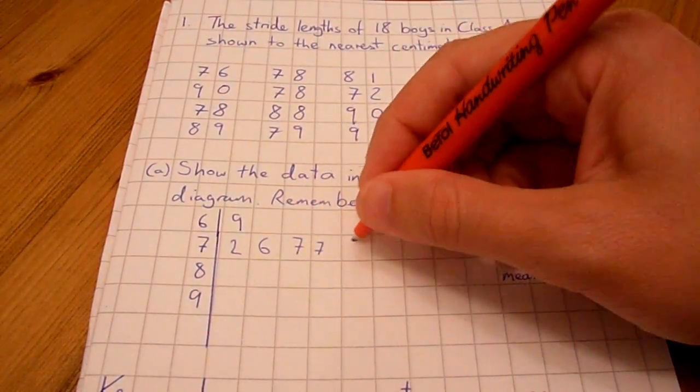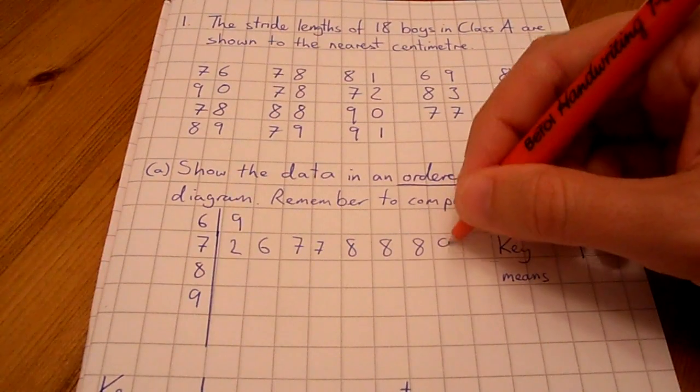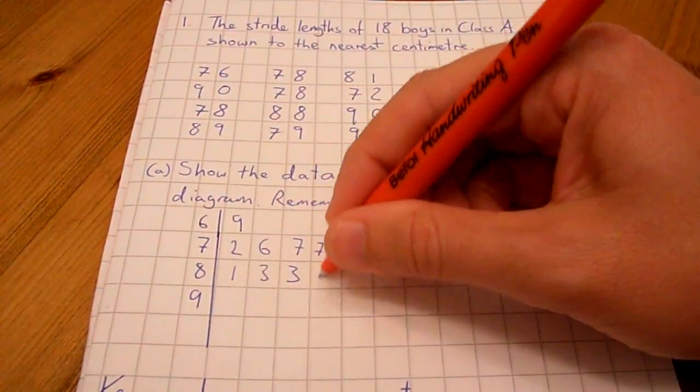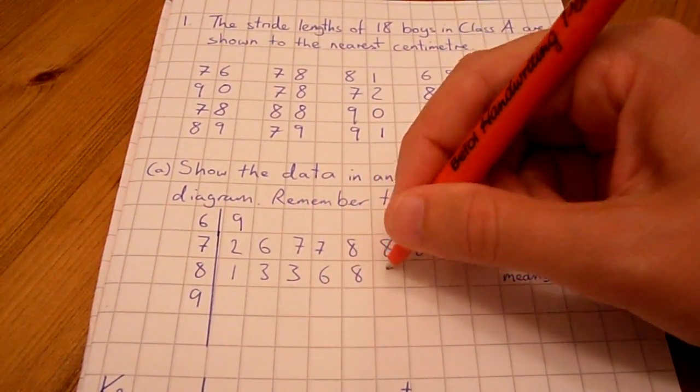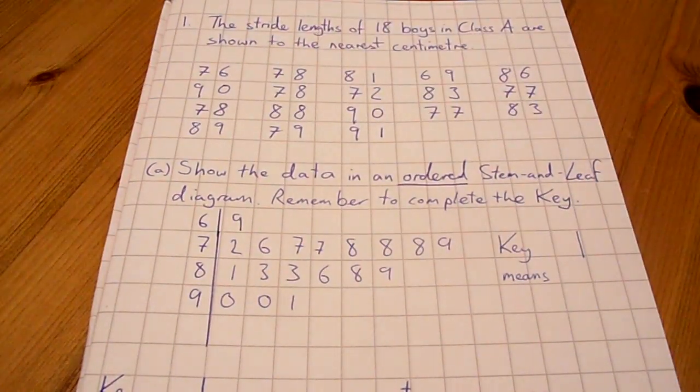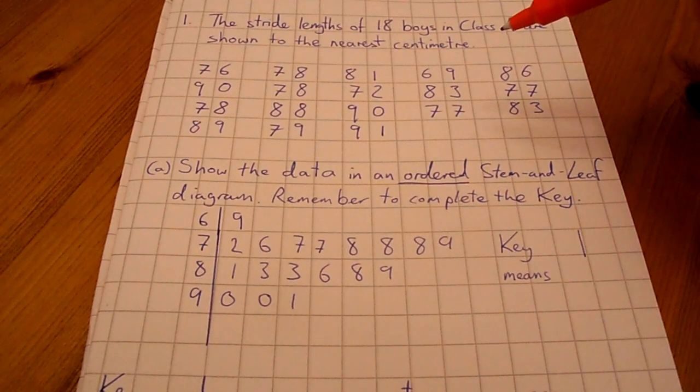For the leaves, remember to account for every number in your list. You should always keep things in order from smallest to largest, and you should end up with a list as follows to account for each of the 18 numbers in your list.